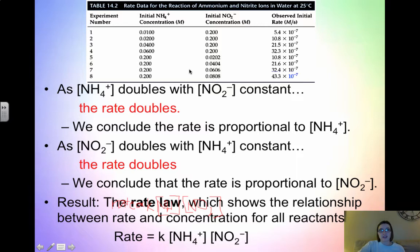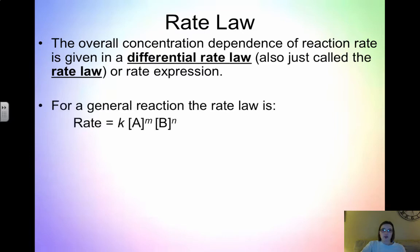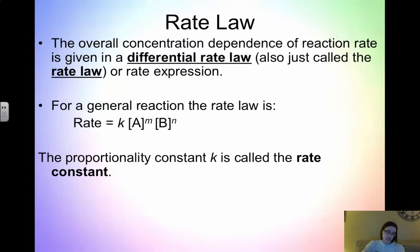The overall concentration dependence is given in what is called a differential rate law, also just called the rate law. For a general reaction A + B → C + D, the rate law is rate = K[A]^m[B]^n. K is the rate constant. Notice that in this rate law, we only have reactant concentrations, because the rate law shows the relationship between reaction rate and reactant concentrations — only reactant concentrations appear in the rate law.